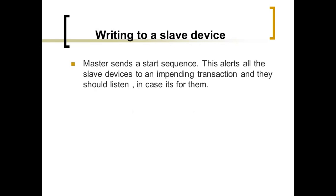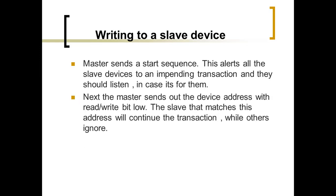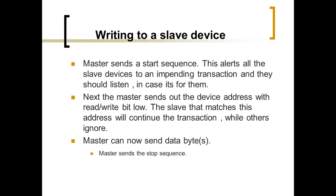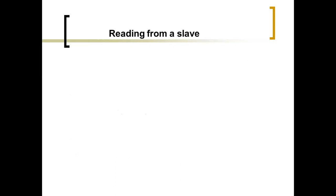Writing to the slave device: the master sends a start sequence, which alerts all slave devices to an impending transaction so they should listen. Next, the master sends out the device address with the read/write bit set low. The slave that matches this address continues the transaction while others ignore it. The master can now send data bytes, then sends a stop sequence.